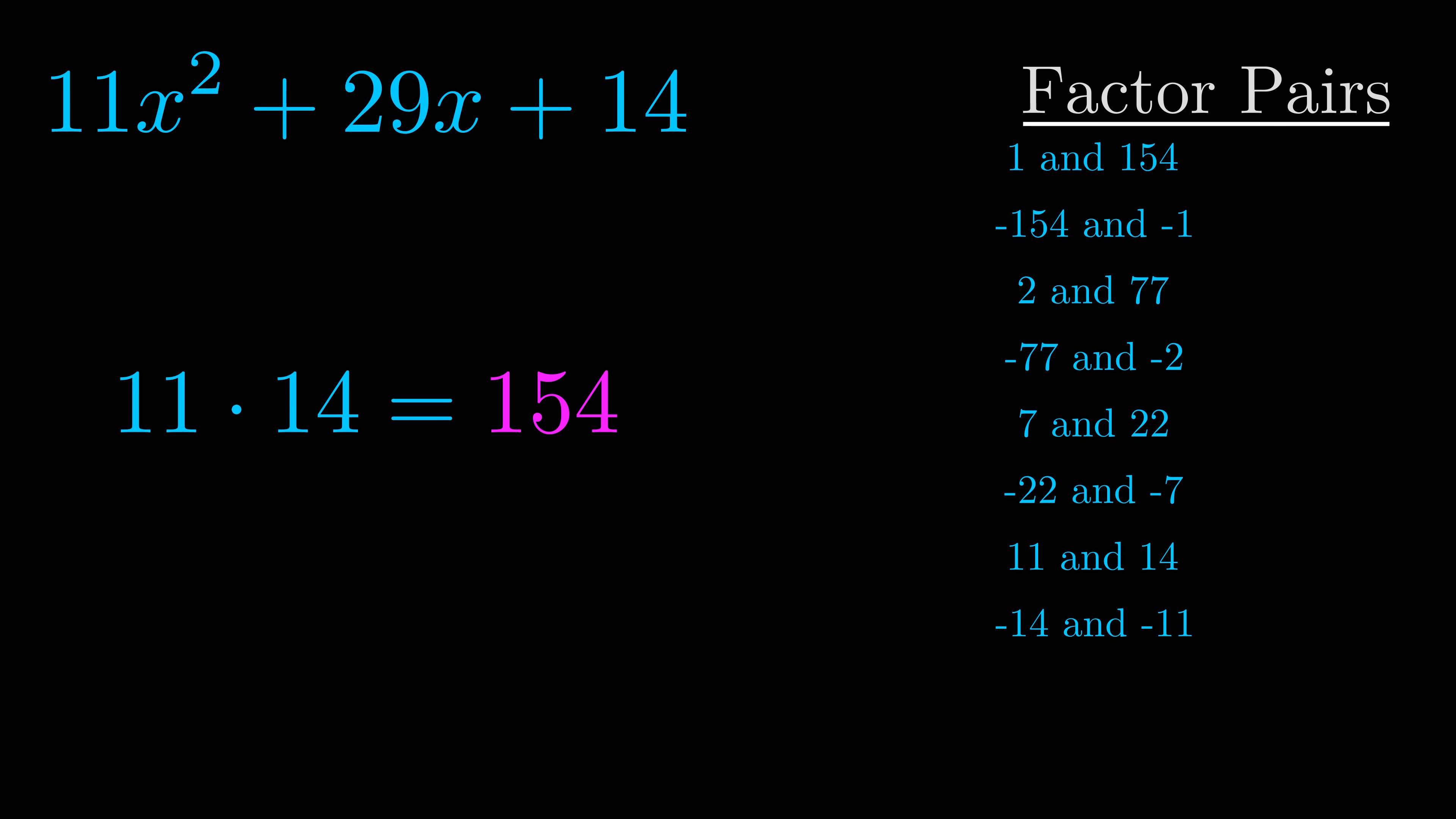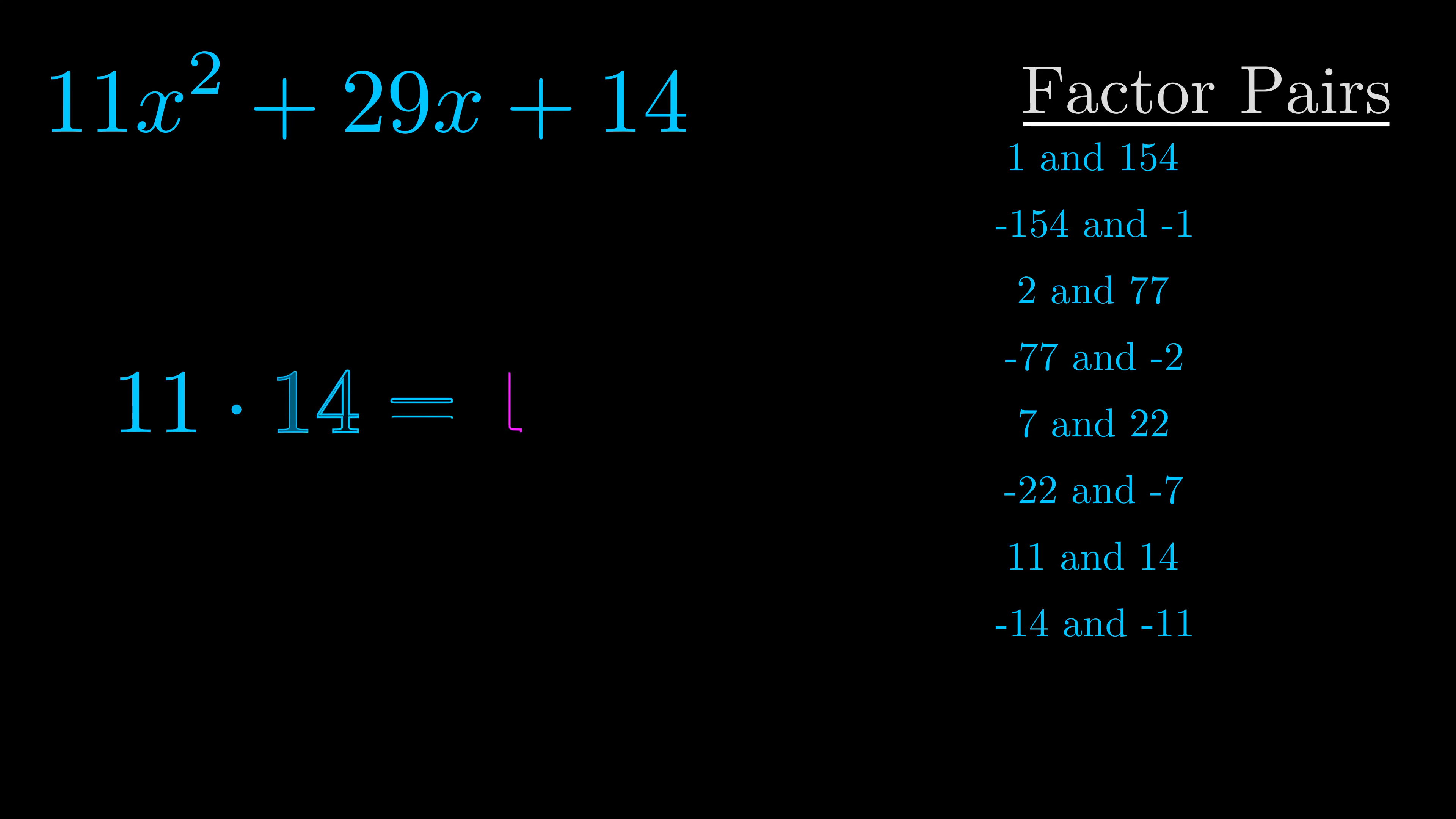Now once you have these factor pairs, the goal is to find which of these pairs adds to the b value. The b value is the coefficient on the x term. That's the middle term, the one that we haven't done anything with yet. And really this is the only factor pair that we need.